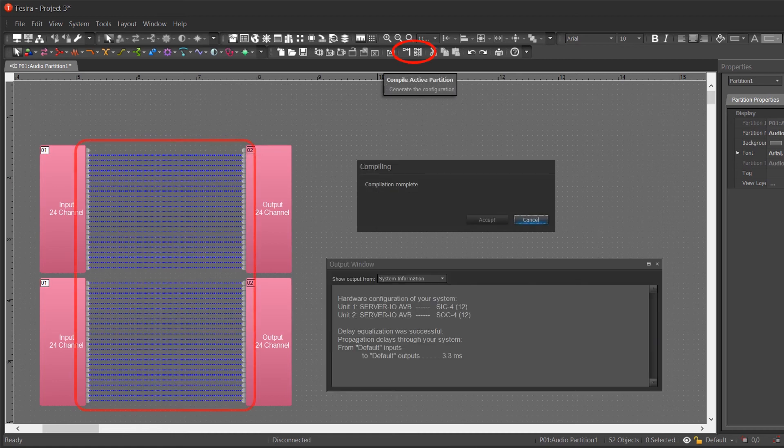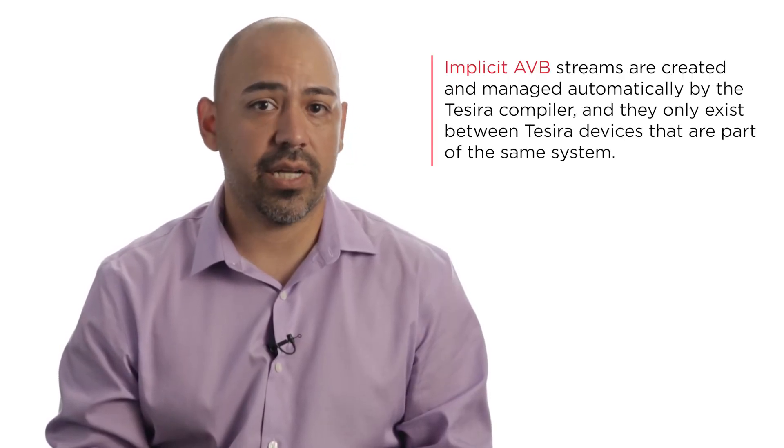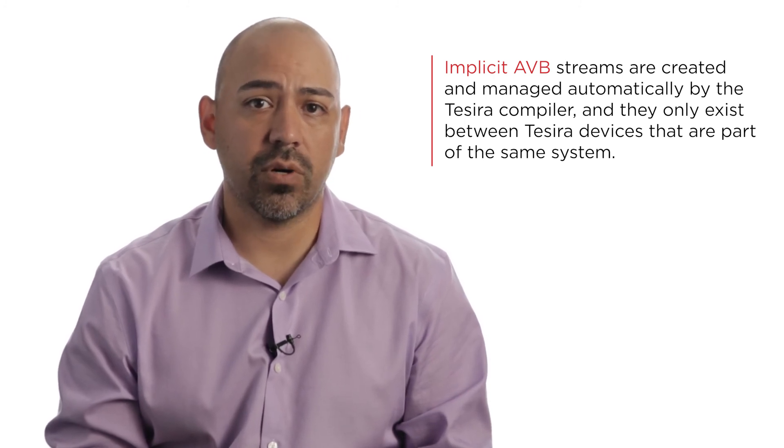You can see, by the blue dotted lines, that we have created a digital path from one chassis to the next by connecting the nodes and running the compiler. There is no explicit configuration required. Simply connect your Tessera devices, run the compiler, and let it do the work for you.